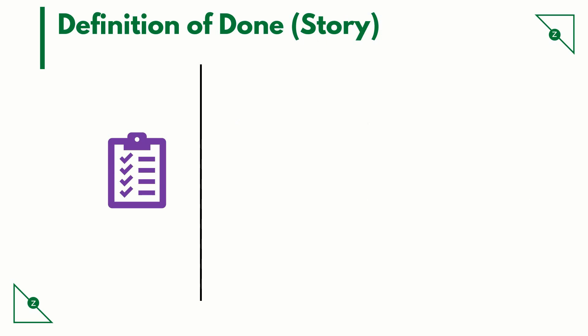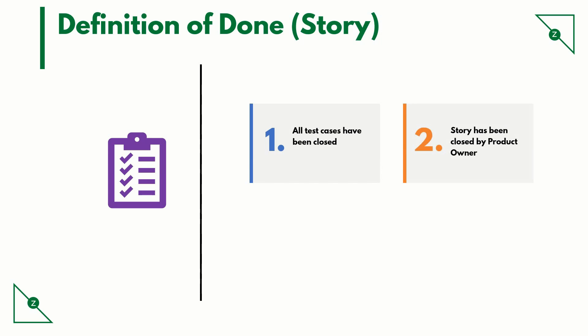Here are some pointers for definition of done for a story. All test cases have been closed. The story has been closed by the product owner. No open bugs in the story — as discussed earlier, the buckets can be predefined.